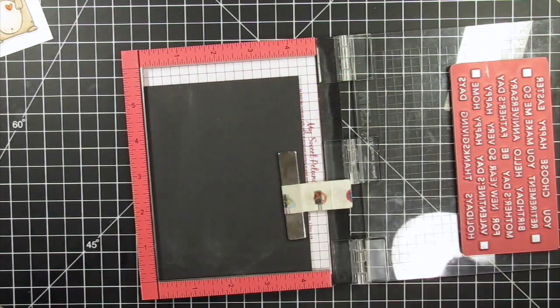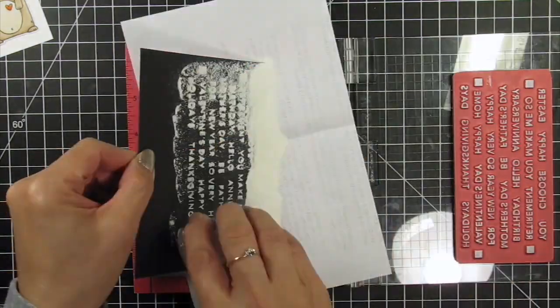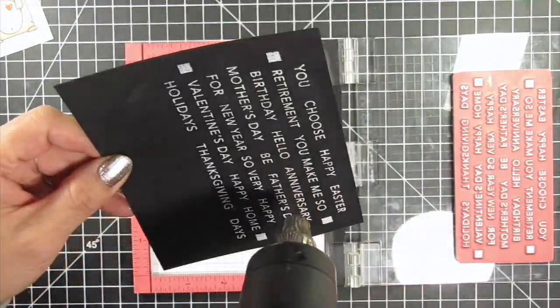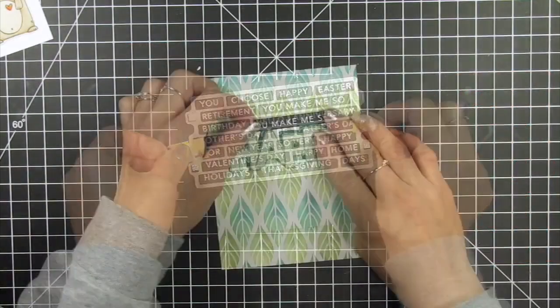For the second part of this sentiment, I heat emboss the Happy Additions onto Oreo cardstock and use You Make Me Sew to complete the sentiment.